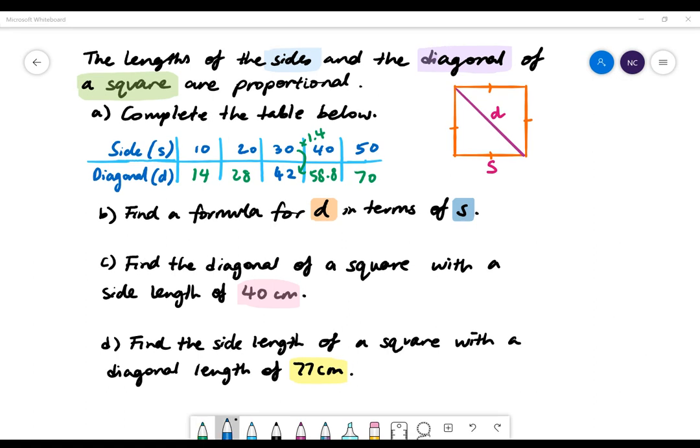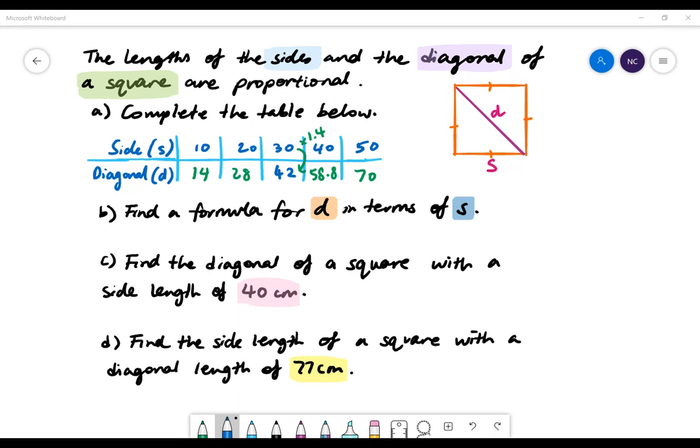Part B: Find a formula for D in terms of S. Since we already have our multiplier, D will equal 1.4 multiplied by S.